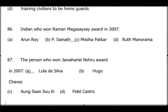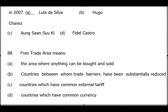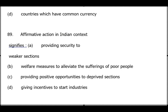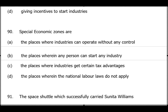Questions 86-87 are irrelevant as they are from 2007. Question 88: Free Trade Area — it means import/export duties in that region are substantially reduced, not that trade is free. Answer is option B, where barriers have been reduced. Question 89: Affirmative action — when upliftment is provided to deprived and marginalized sections, it is termed affirmative action. Answer is option B: welfare measures to alleviate the sufferings of poor people.